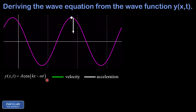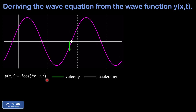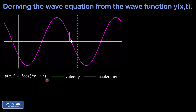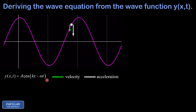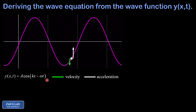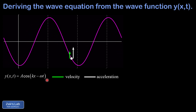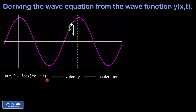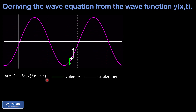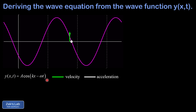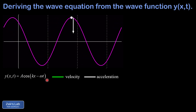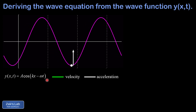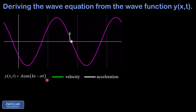What we're looking at in the animation is a single point highlighted at a fixed value of x on a string with a sinusoidal wave passing through it. Recall that this point moves in simple harmonic motion, and the amplitude and frequency of this motion are the same for any point we might highlight along the string. The green vector shows the y velocity at any moment, while the white vector shows the acceleration of the point at any moment. Our first goal is to find expressions for the y velocity and y acceleration of this point.